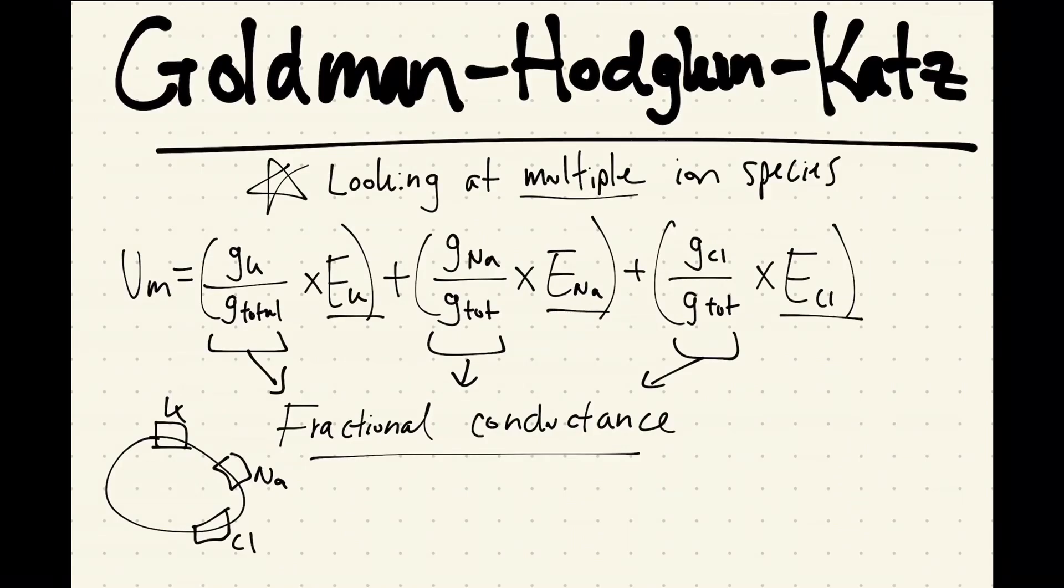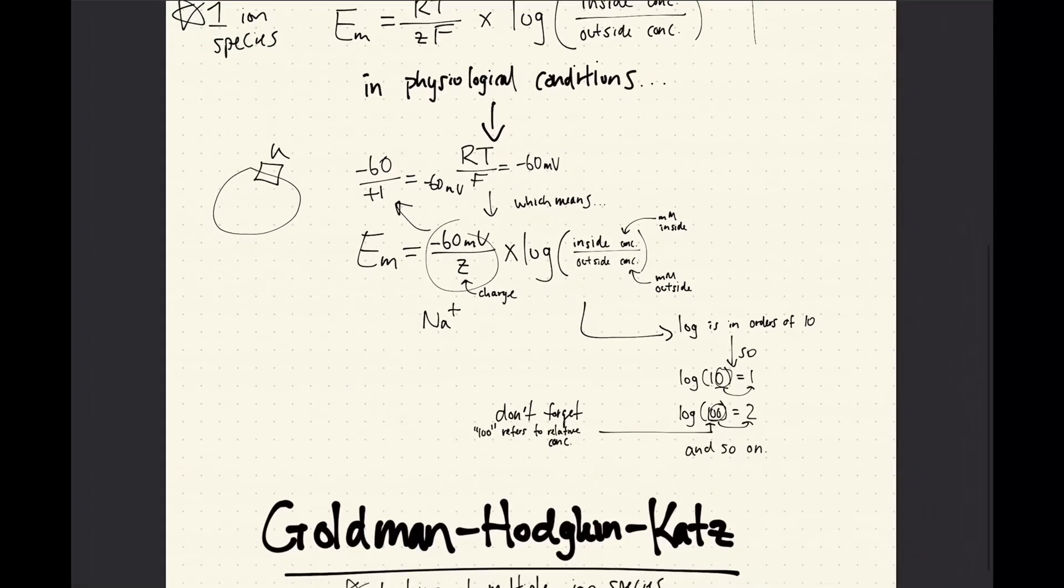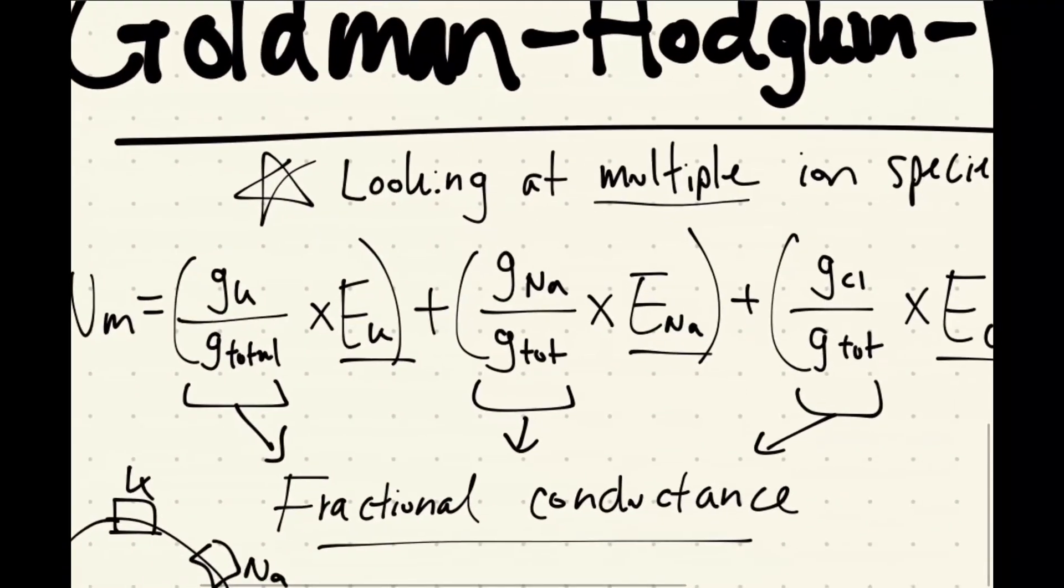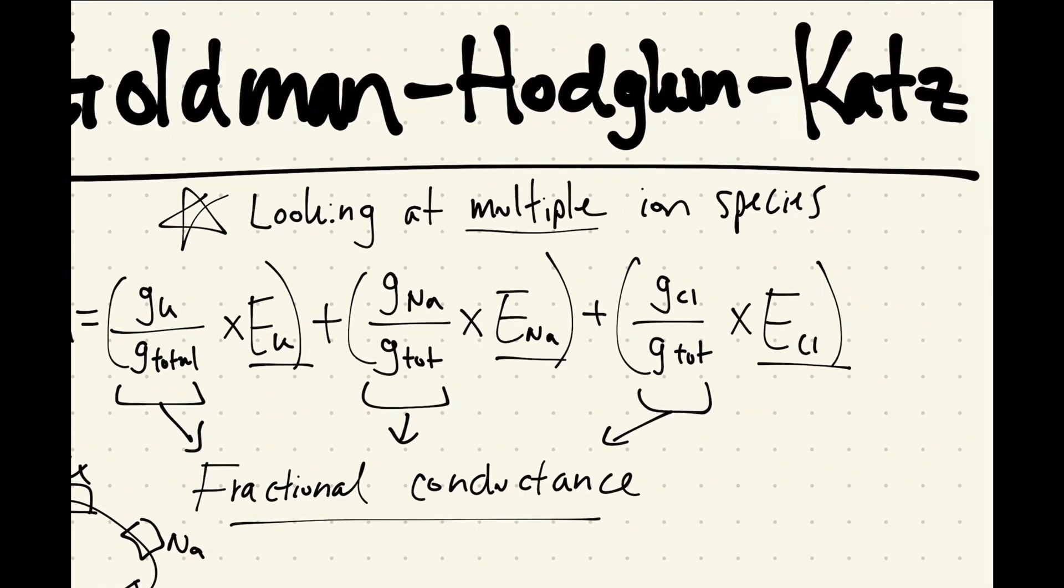And these EK, ENa, ECl—those are all from the Nernst equation that you can calculate when you're isolating your potassium, your sodium, and your chlorine. I hope this helps, and have a good day. Thank you.